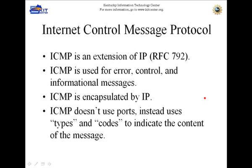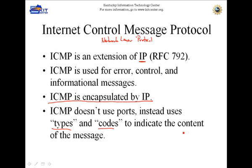Let's briefly talk about ICMP, the Internet Control Message Protocol. ICMP is an extension of IP and is also a network layer protocol. It's encapsulated by IP, which means it's an embedded protocol. It doesn't use ports. Instead, it uses types and codes to indicate the contents of the message. We're going to use the types and codes to filter some of this out — we're actually going to filter most of it out.